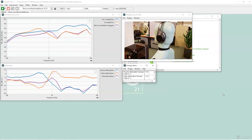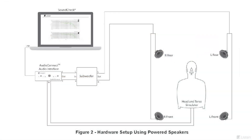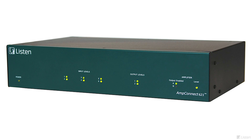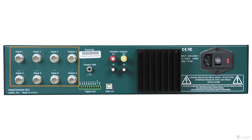This test can be modified to work with a diffuse multi-speaker configuration, and in an environment with two or more speakers, both ears can be measured at the same time. Our new AMP Connect 621 interface has six inputs and two outputs, so you can even measure both the left and right channels simultaneously while also generating stereo background noise.